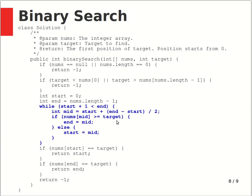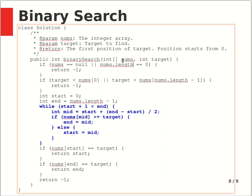Today let's look at a typical algorithmic problem called binary search. Suppose you have an array called nums where every element is sorted — it goes from the smallest element in the first position to the largest in the last position. In this sorted array, you are trying to find the index of a target number. The binary search function takes two inputs: the sorted array and the target number whose position you want to find.